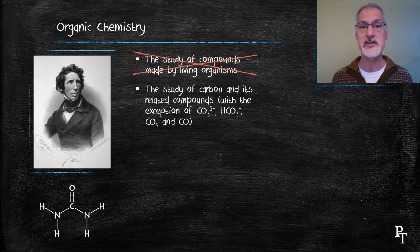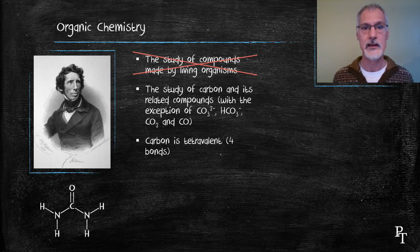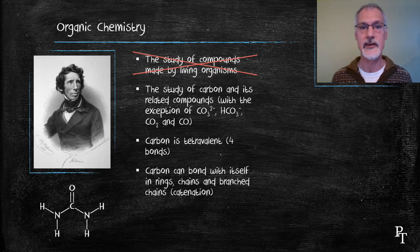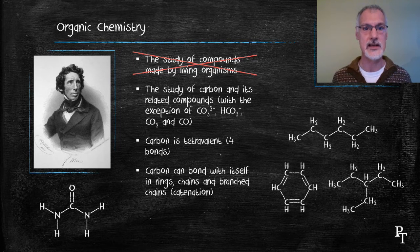Well, first of all, carbon is tetravalent, meaning it can bond with four other things. It has an extremely high bonding capacity. And not only does it have a high bonding capacity, it has the ability to bond with itself in rings and chains and even branch chains in a property called catenation.